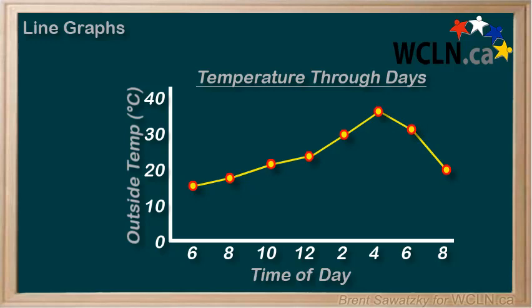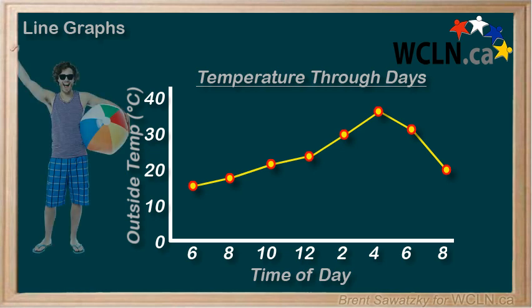The most common type of graph is the line graph. Line graphs often show trends over time. For example, how does the temperature change throughout an August day in Kelowna?